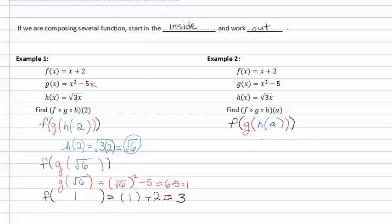Let's start with h of a. H of a will mean we're substituting a in for x. This will give us the square root of three times a, where a goes in place of x.